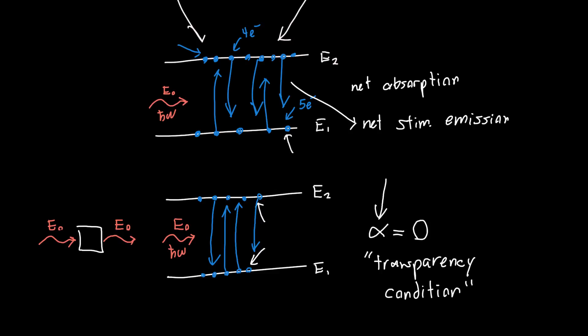In future videos we'll calculate the overall absorption coefficient alpha — how much light is absorbed versus how much is stimulated. Depending on the number of carriers in state two versus state one, alpha can be positive, meaning more electrons in state one and net absorption, or it can be negative, which is called optical gain. We'll go over how to find alpha and when it will be positive versus negative. Thanks for watching — please like and subscribe, and post any questions in the comments.